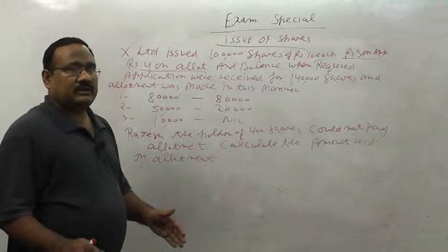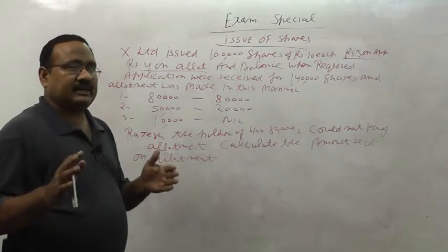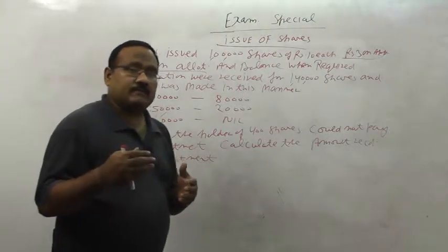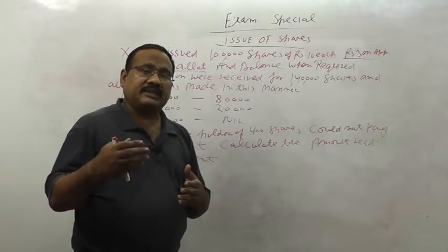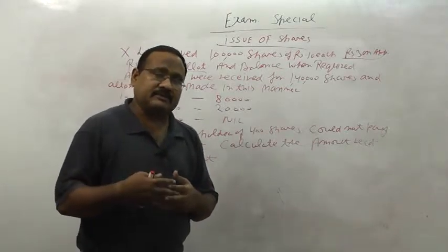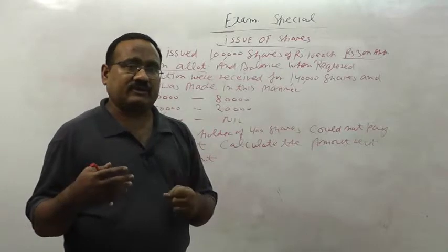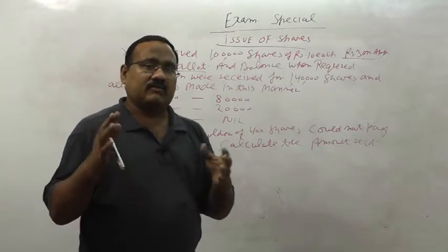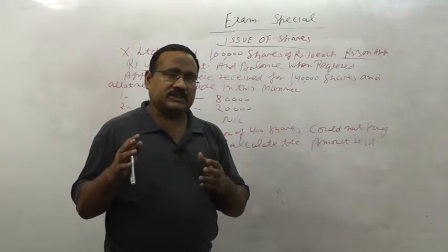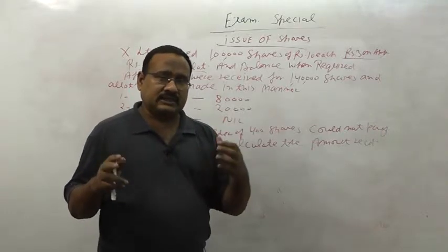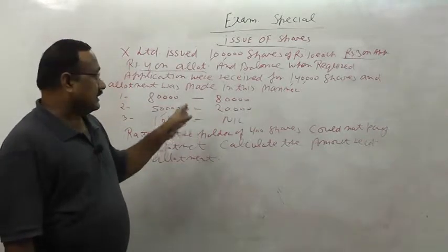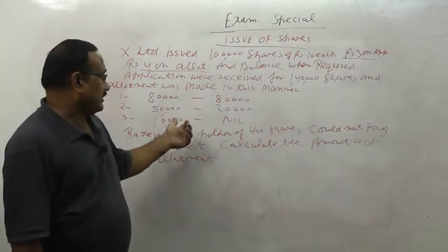First of all, the total amount due on allotment is 4 lakhs. Then you find out how much amount we carried forward from the application, because applications were received for 1 lakh 40,000 shares while the shares issued were only 1 lakh. The next step is to identify who had their shares rejected.